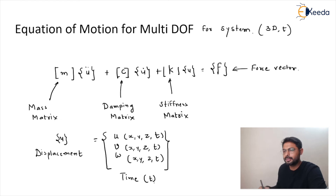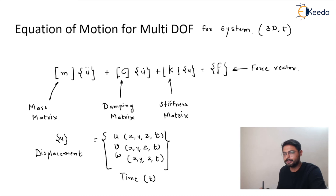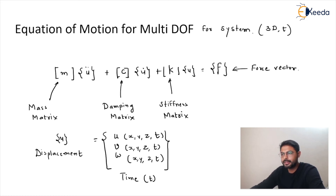For time t we need to consider that this vector represents u, v, and w which are functions of the Cartesian system x, y, z and the time denoted by T. We need to consider this for solving multi-degree of freedom problems.